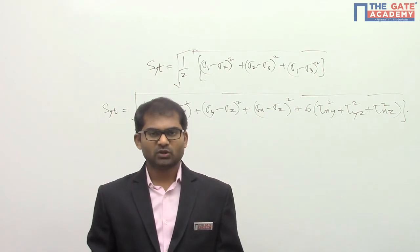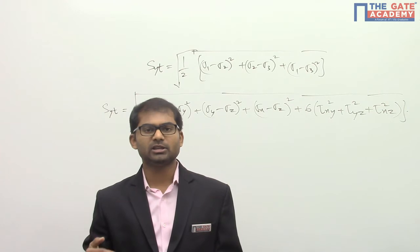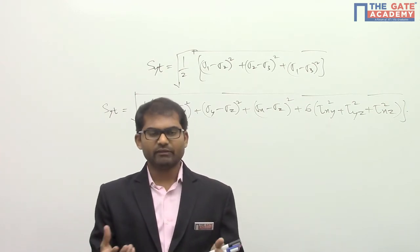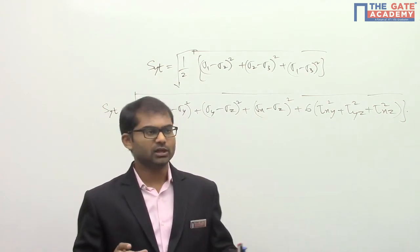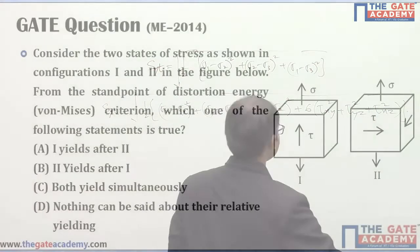We should say which one will yield first. Basically, we will find out the energy. The failure will happen when the particular loading case energy equals the distortion energy of uniaxial loading case. Which one is having higher distortion energy will yield first. Let's get the value of distortion energy using this formula in both the cases.